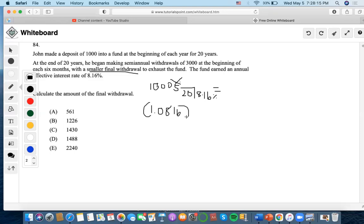And what I'm going to do is I'm going to get 1000 times 1.0816 and get 1081.6 as the payment. So I'm going to take that amount, I'm going to do 1081.6 as the payment, 20 as the number of years,